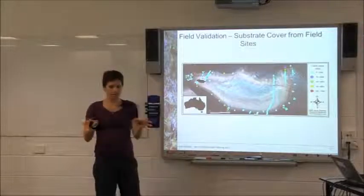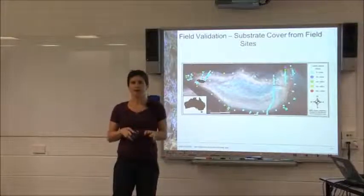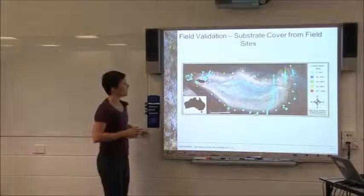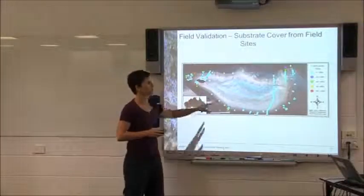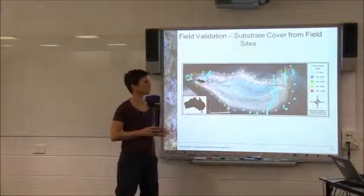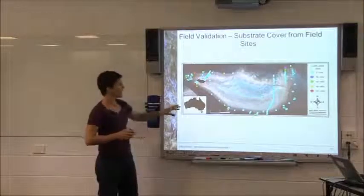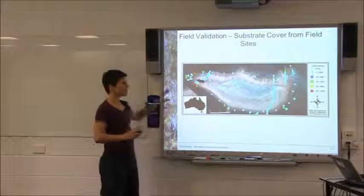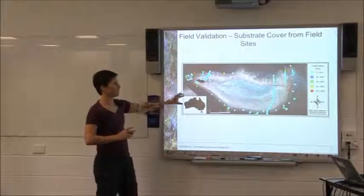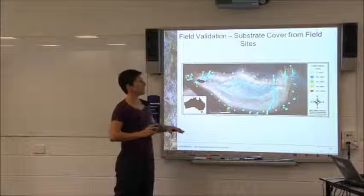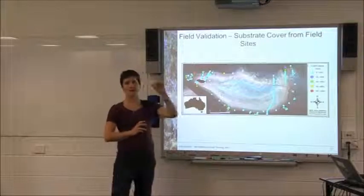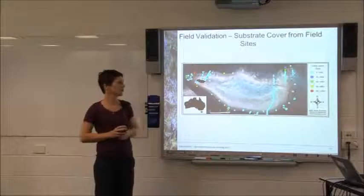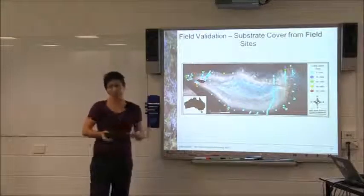Once we've compiled all that data — bearing in mind that everything has a GPS location associated with it — it's possible to create a map of the individual field sites we visited and assess the amount of coral at those locations. That's just basic colour coding of each site: low coral cover areas are in cyan and higher coral cover in red. That's just based on field data.